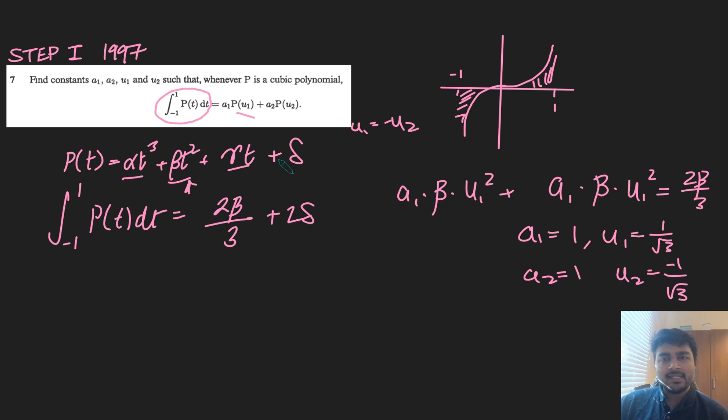So let me just quickly go over that again. We've evaluated the integral on the left side, and it's 2 beta over 3 plus 2 delta, and we need to choose these numbers u1 and u2 such that when I add up, you know, a1 p(u1) plus a2 p(u2), the alpha and gamma terms cancel, and I'm just left with beta and delta terms. Notice that when I add the two terms up, I'm going to get 2 delta anyway, so that bit's fine. So I really just need to focus on the 2 beta over 3, and I've just found a way that that can work, is if I have a1 and a2 both being equal to 1, and u1 and u2 being 1 over root 3 and minus 1 over root 3.